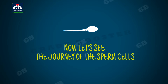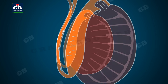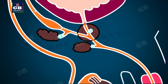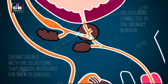Sperm cells formed in the testes travel through a tube called the vas deferens, and on the way they are joined with the fluid secretions from the prostate gland and seminal vesicles. The vas deferens is a common duct for both the sperms and urine, and it is also connected to the urinary bladder.